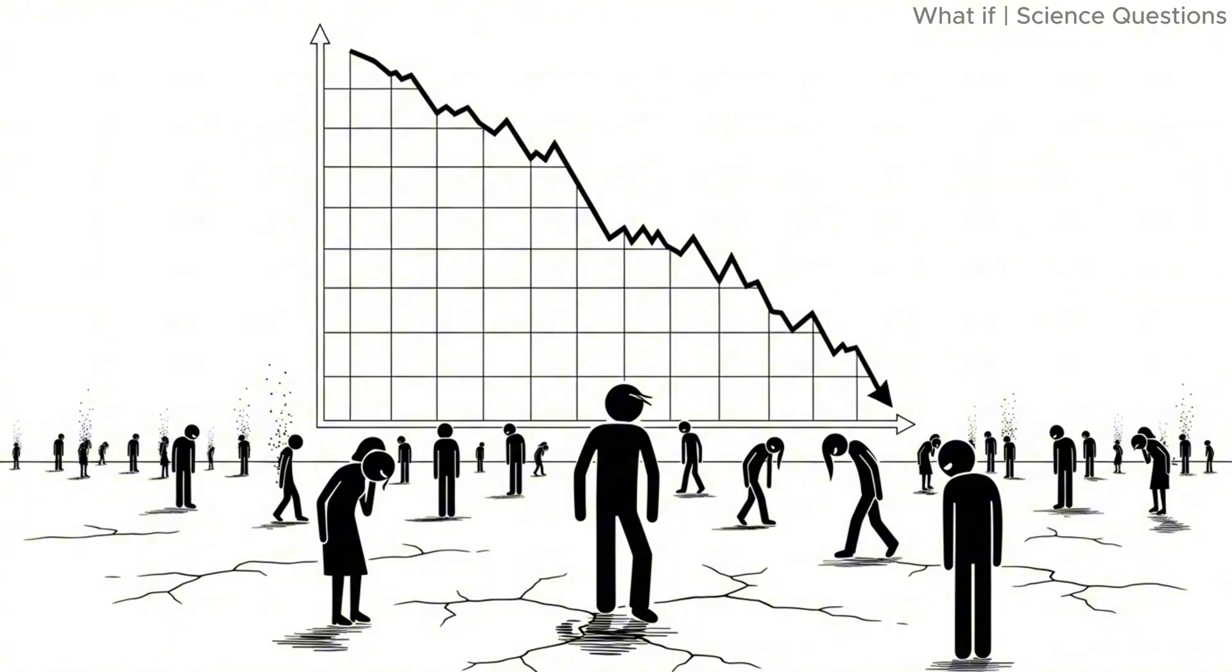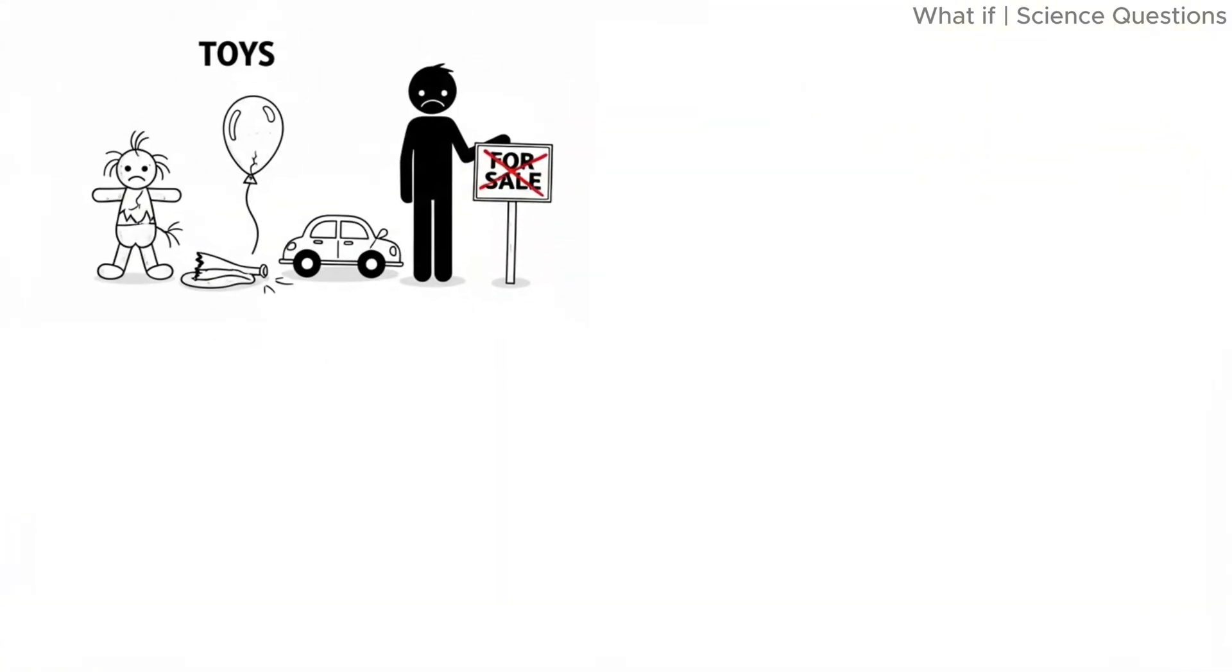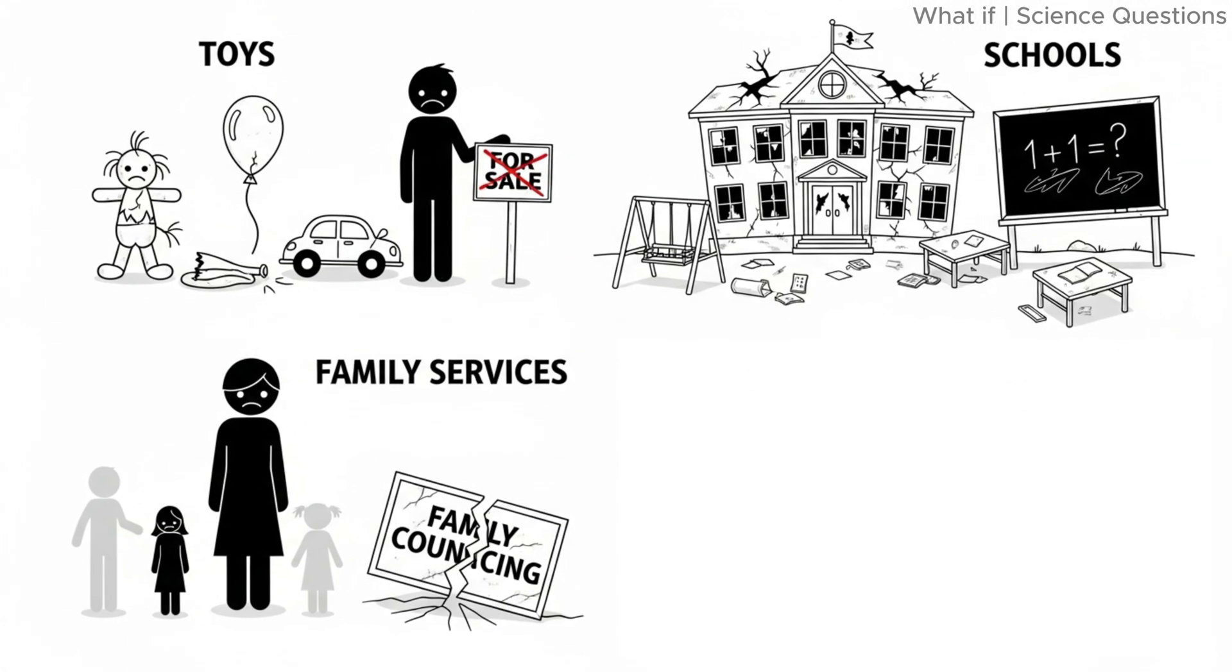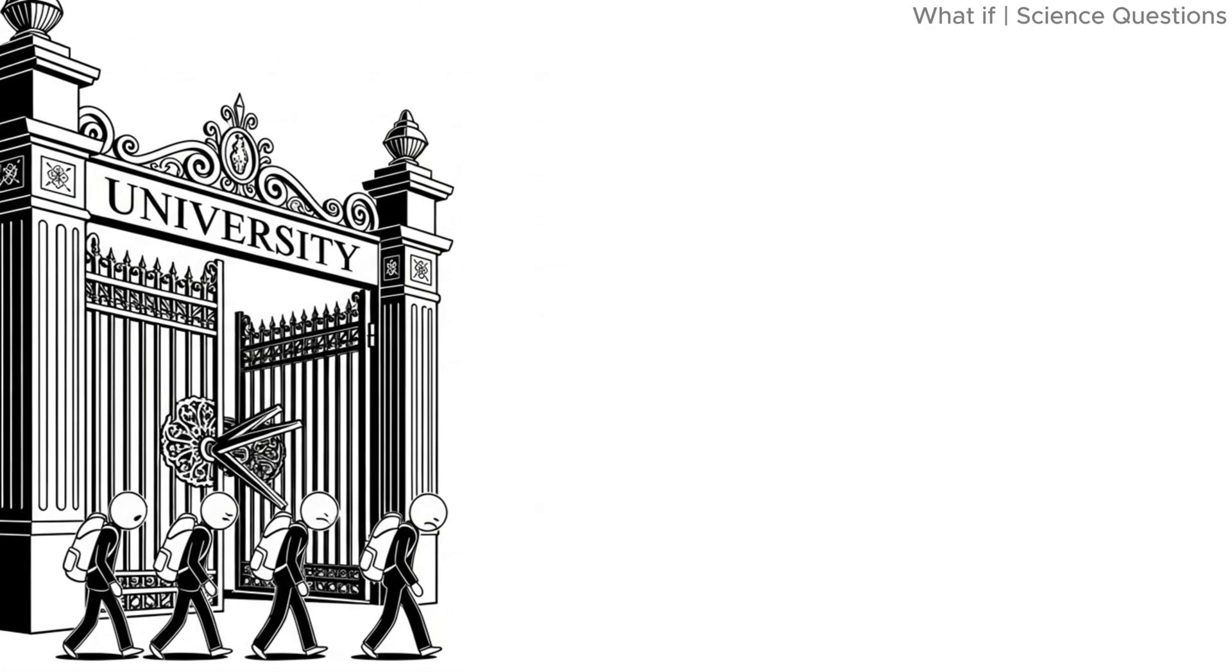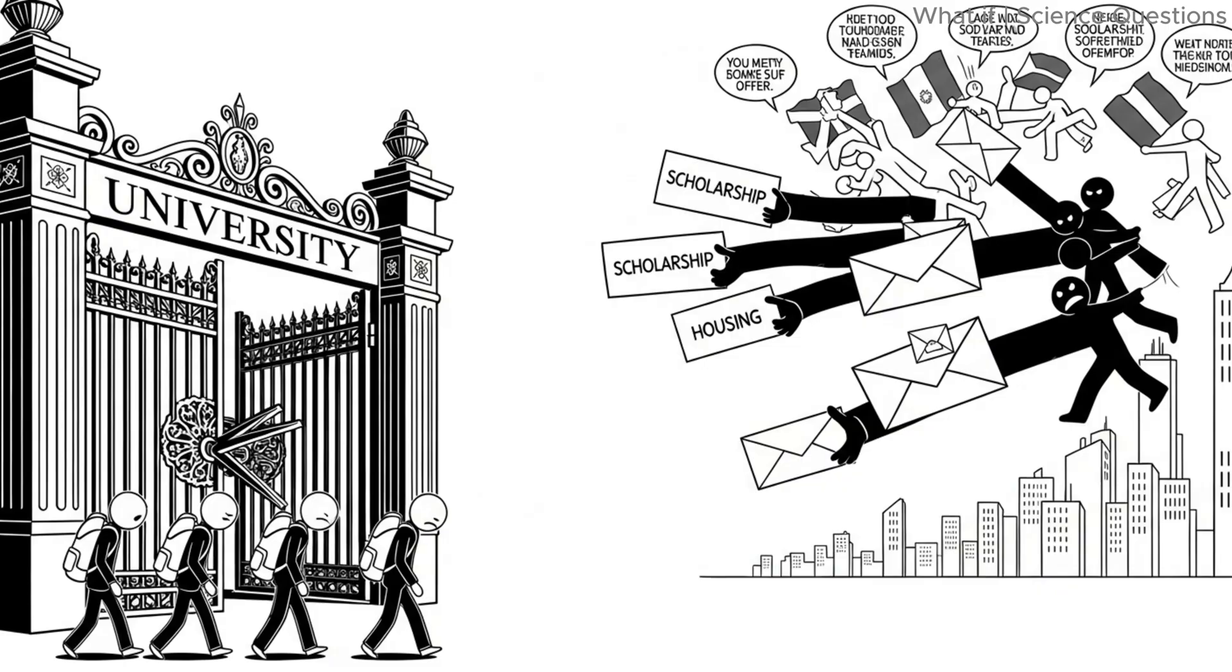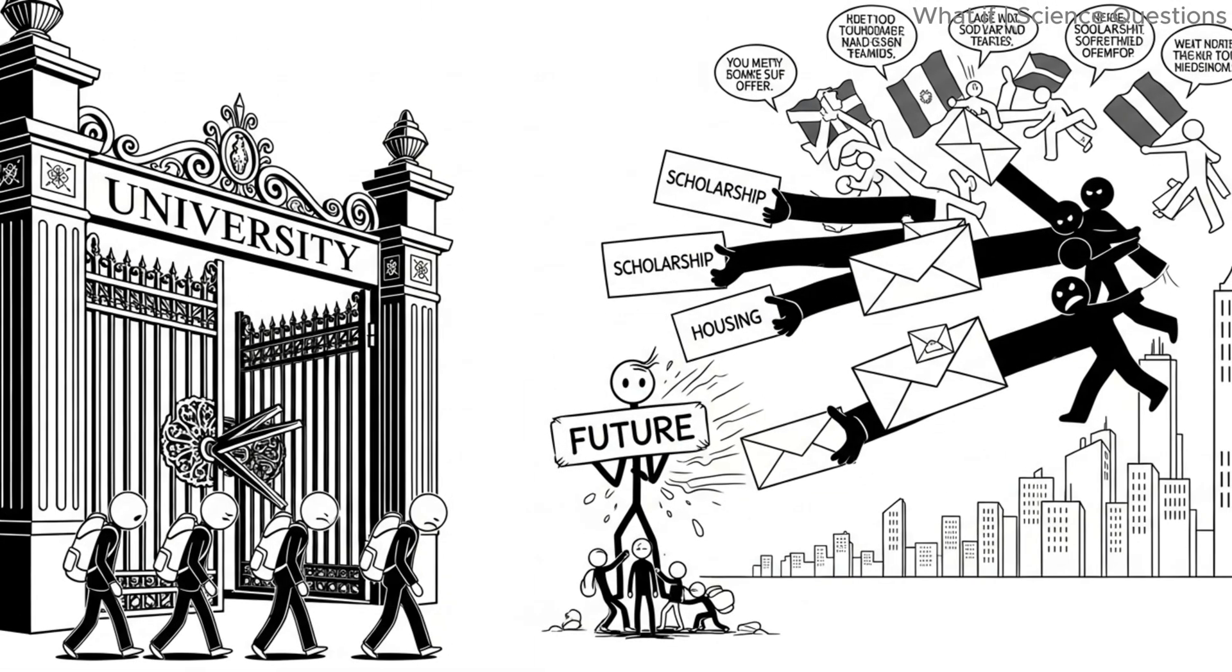Year twenty. The grey era. Global population has dropped drastically. Entire industries collapse. Toys, schools, family services, children's medicine, college campuses close. Nations fight over the remaining young people, offering scholarships, housing. But there is no future. Only memories.